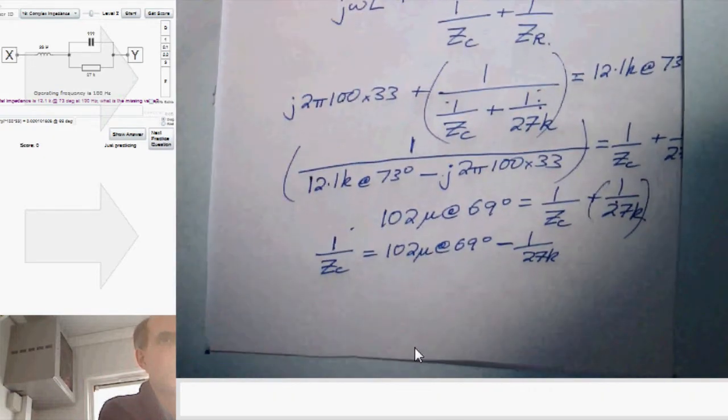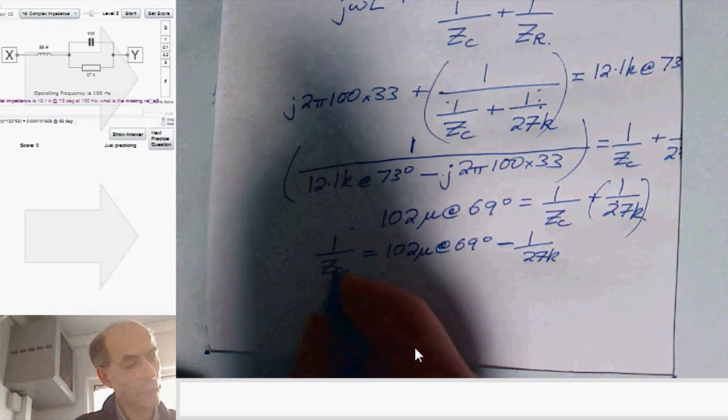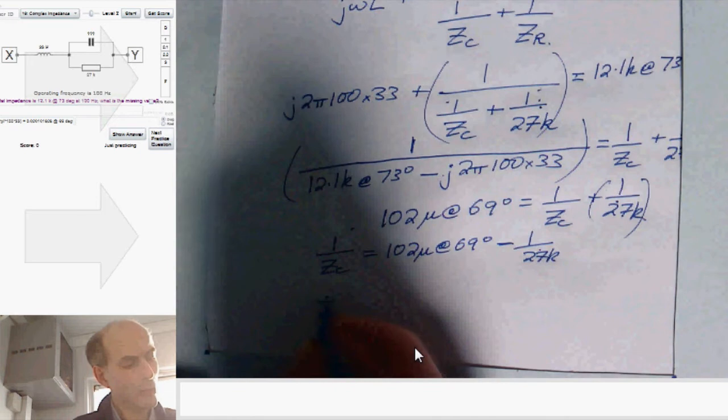Just get a bit more space here. Once I've done that, I can work out ZC. And ZC would be 1 over that lot. But I'm not going to do that.